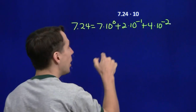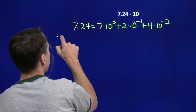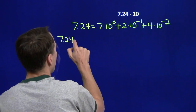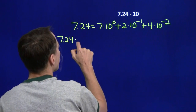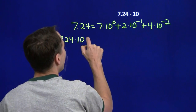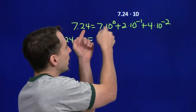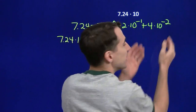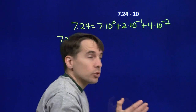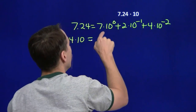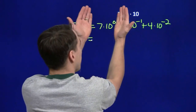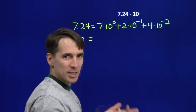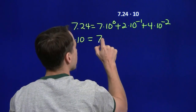And then we multiply by 10. So 7.24 times 10 — we're going to multiply each term by 10, just using the distributive property. When we multiply this by 10, the 10 to the 0 times 10 gives us 10 to the 1st.